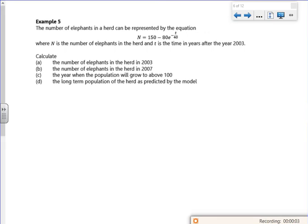Because you can never have enough of an exponential question, here's another one, example 6. So the number of elephants in a herd can be represented by that, where n is the number of elephants and t is the time in years after 2003.